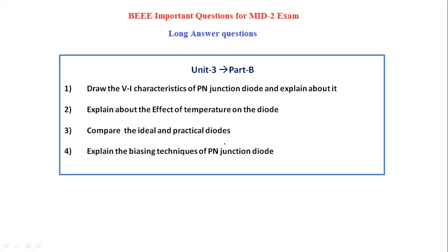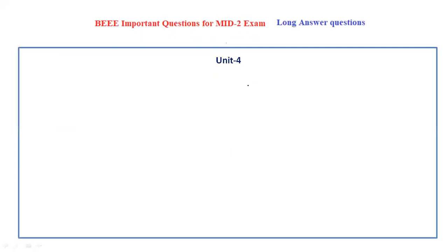Explain the biasing techniques of the PN junction diode. First, explain what is a diode, after that what is forward bias and what is reverse bias. There are two biasing techniques, and you have to explain both of them. These are the long answer questions in the third unit part B.